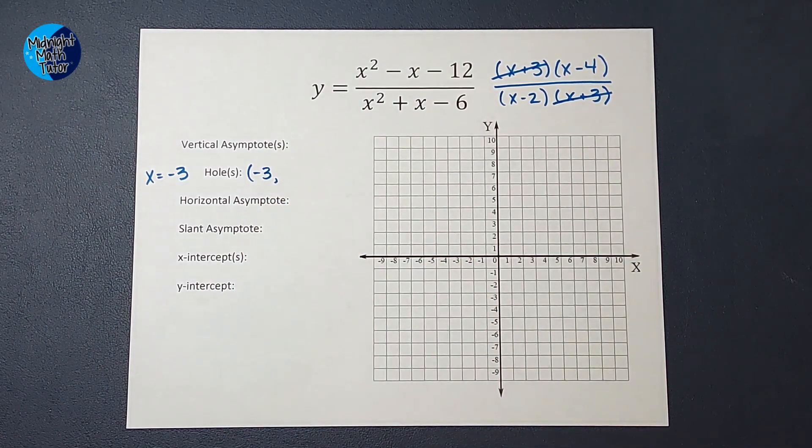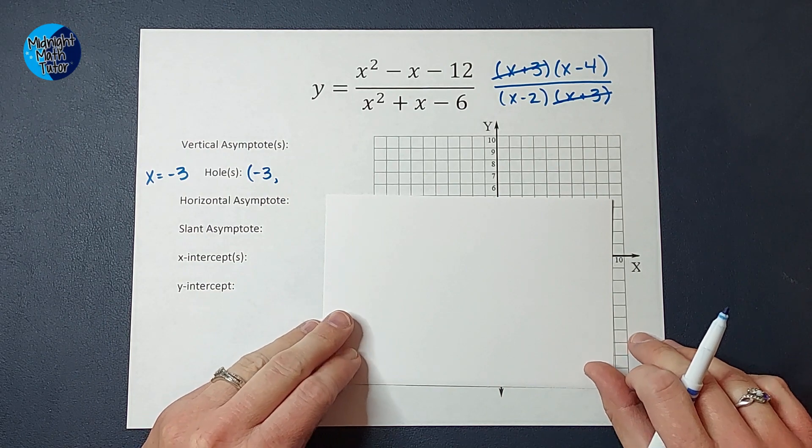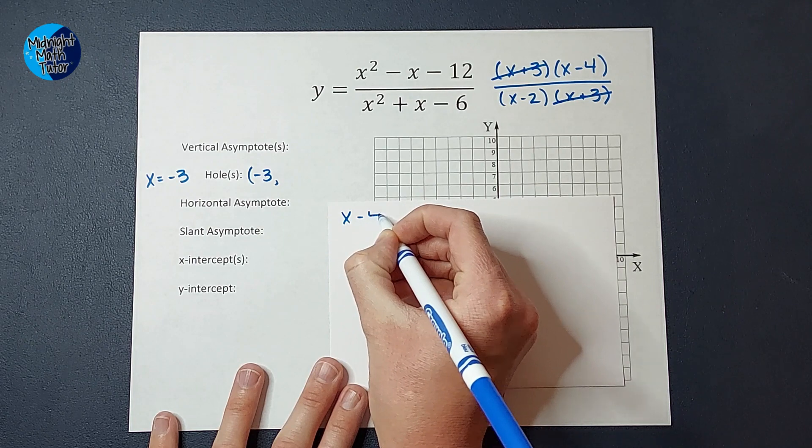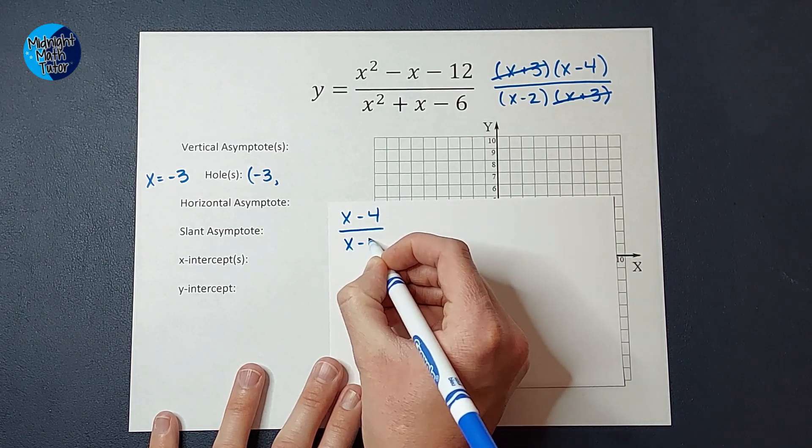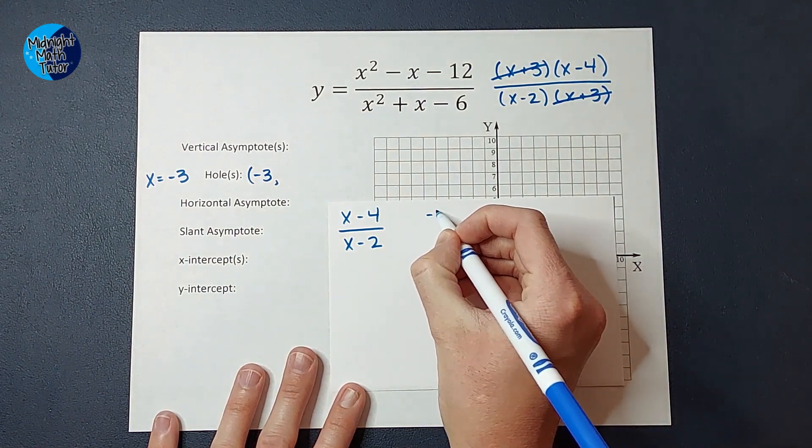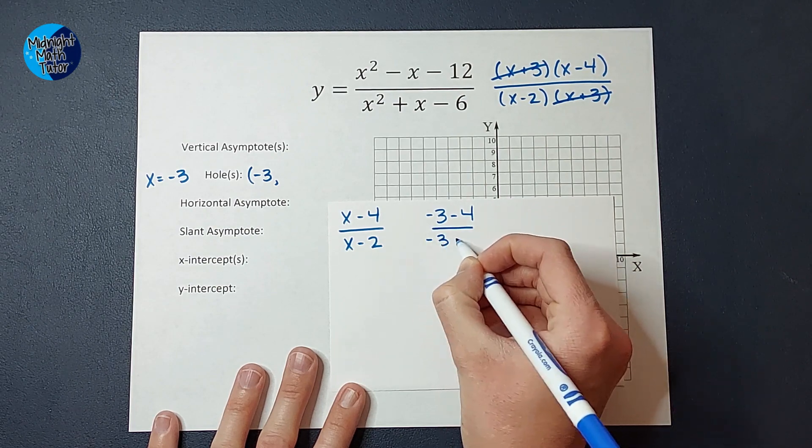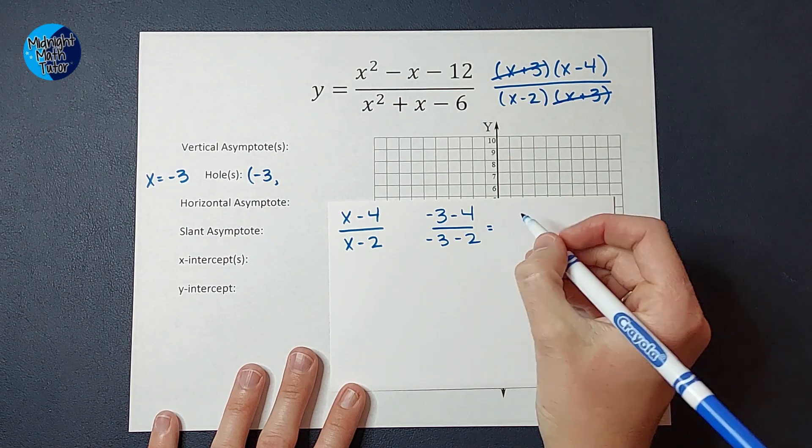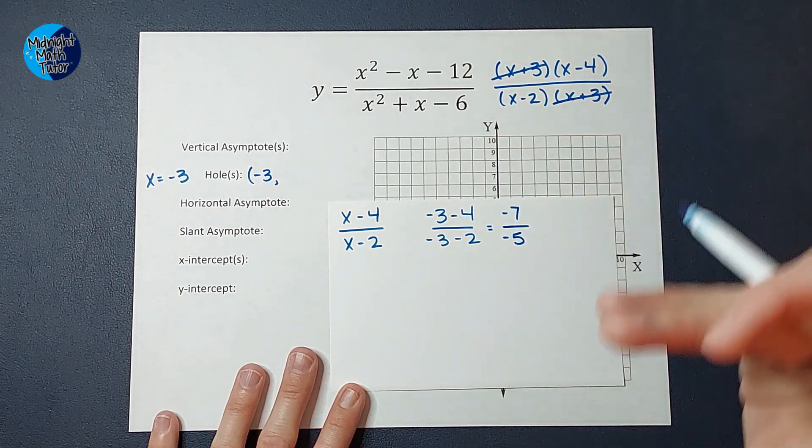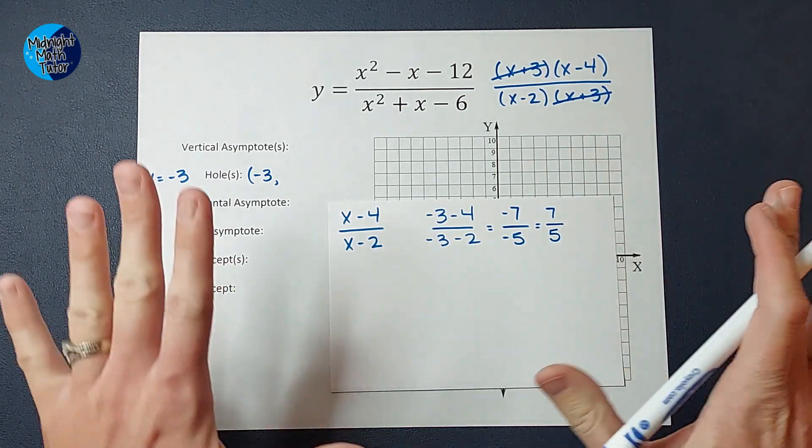So to figure it out, I'm going to take what's left of my function after these cancel and plug in negative 3 for x. So after those cancel, I'm left with x minus 4 over x minus 2, right? So I'm going to plug in negative 3 and see what I get. So I'm going to have negative 3 minus 4 over negative 3 minus 2. Negative 3 minus 4 gives me negative 7. Negative 3 minus 2 gives me negative 5. A negative divided by a negative gives me a positive 7 fifths.